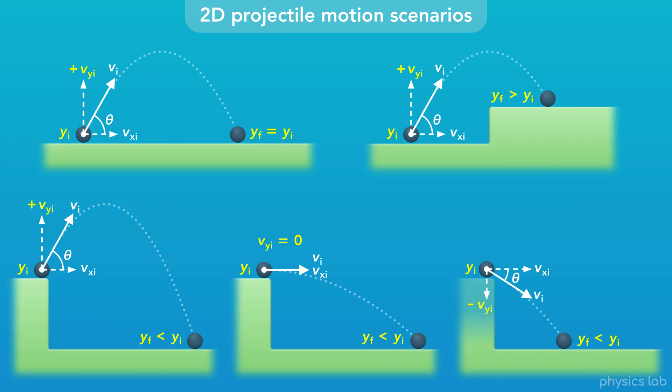The only difference between these scenarios is the initial and final values, and the positive and negative signs. But the motion behaves the same way in each case. We're going to use the same equations, and solve problems the same way for each one.